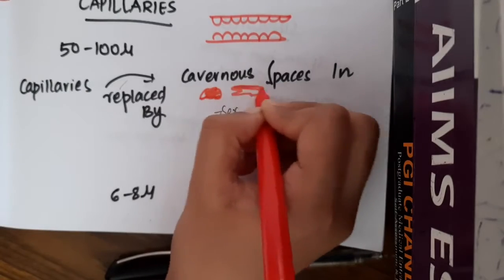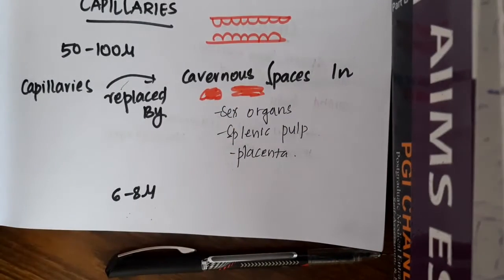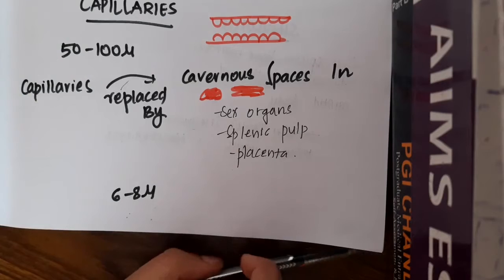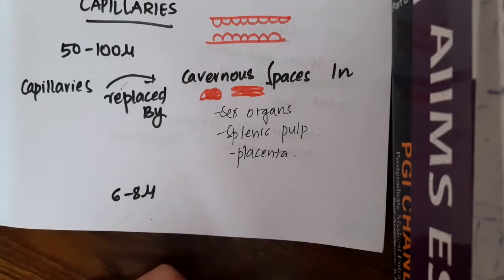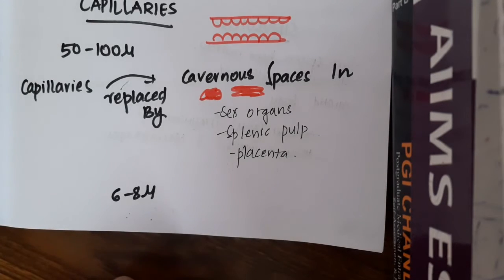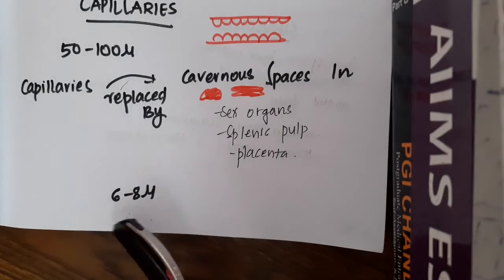The areas where capillaries are replaced by cavernous spaces include sex organs, splenic pulp, and placenta.